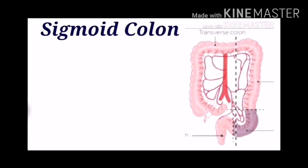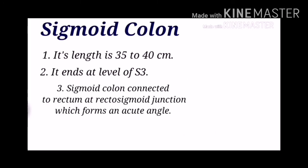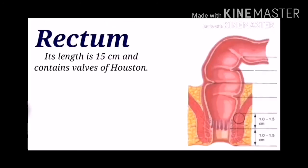The fifth part of the colon is the sigmoid colon. Its length is about 35 to 40 centimeters, and it ends at the level of S3. The sigmoid colon connects with the rectum at the rectosigmoid junction, which forms an acute angle. The rectum length is 15 centimeters and contains three valves.